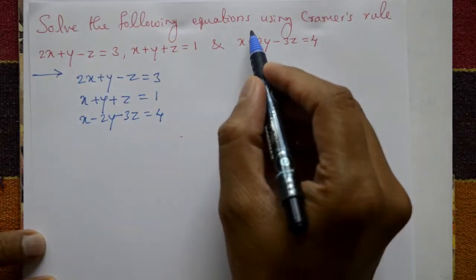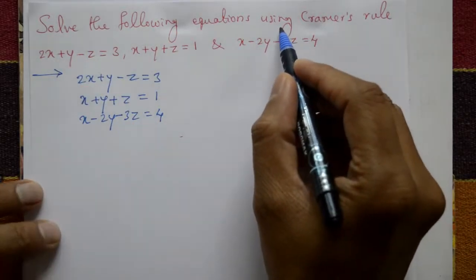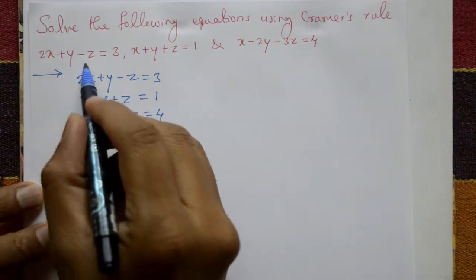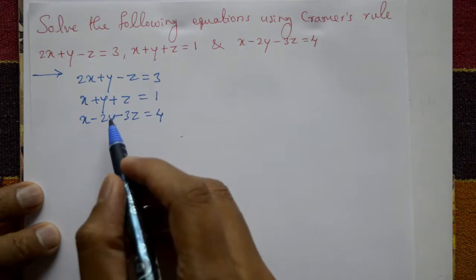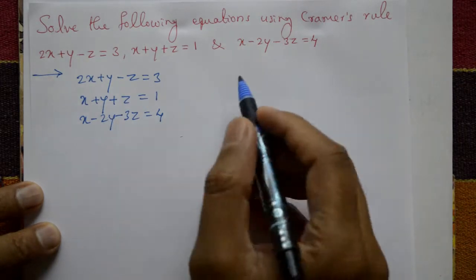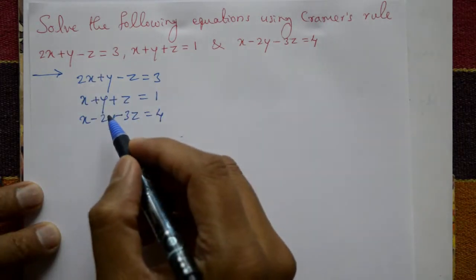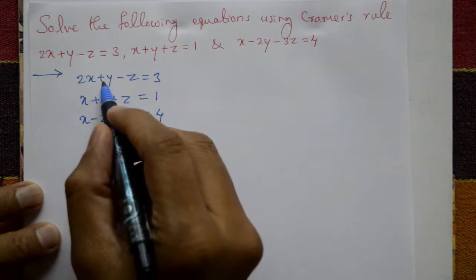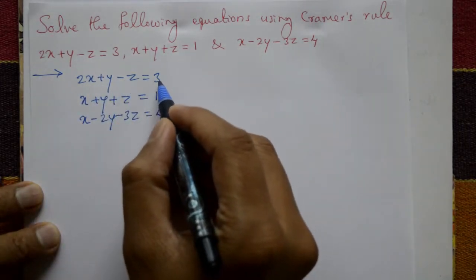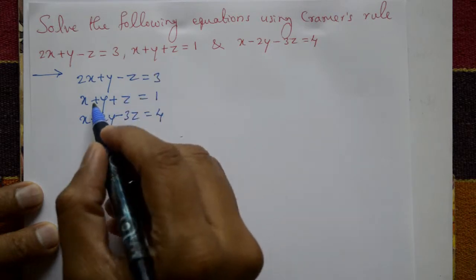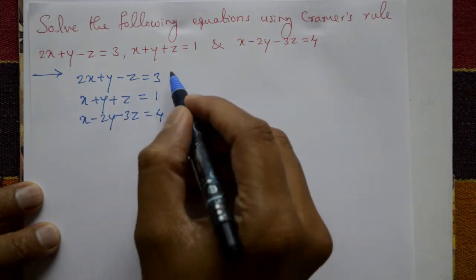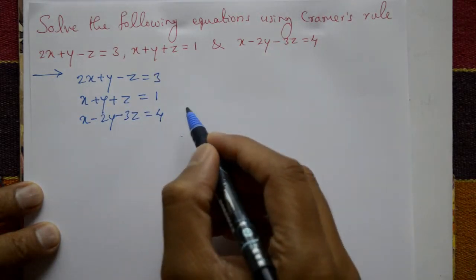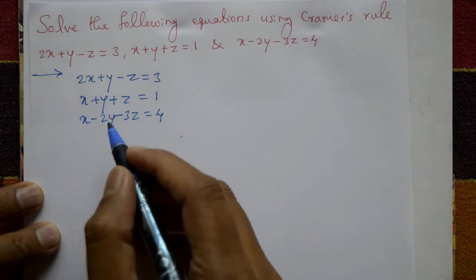Solve the following equations using Cramer's rule. The equations are: 2x + y - z = 3, x + y + z = 1, and x - 2y - 3z = 4.